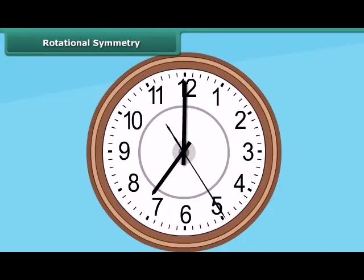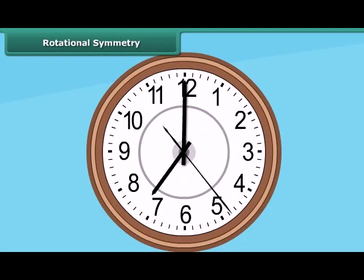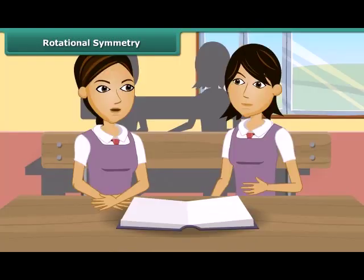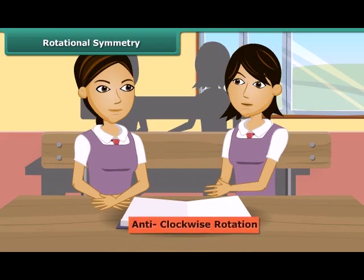Now look at this clock — it's going round and round, which means it is rotating. The hands of the clock rotate in a clockwise rotation. And when something rotates other than clockwise, then we call that rotation anticlockwise rotation.